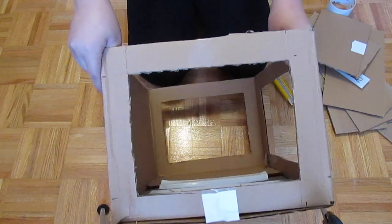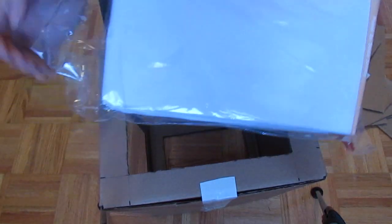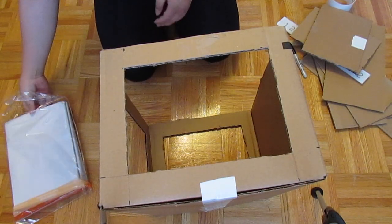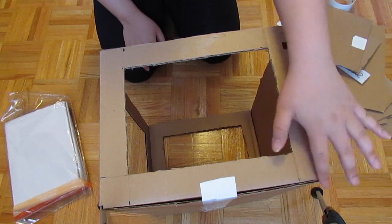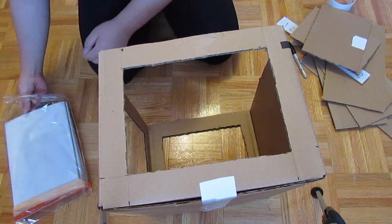So now you have a window here, here, and here. Next you're going to be getting your white tissue paper, I got this from Michaels, and you're going to be measuring out the width and length of the box and you're going to be covering each of the windows with the white tissue paper.